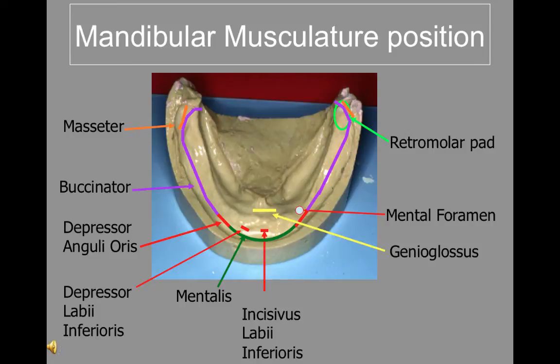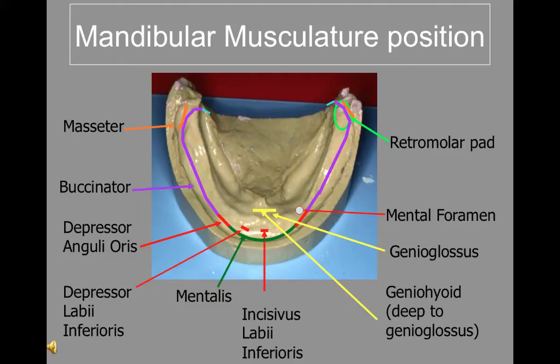The genioglossus arises from the superior mental spine, or the superior genial tubercles, on the inner surface of the symphysis near the midline. The superior fibers go to the tip of the tongue, the middle fibers to the root of the tongue, and the inferior fibers attach to the hyoid bone. This muscle can extrude and retract the tongue, which has a profound effect on the length of the lingual flange of the mandibular complete denture.